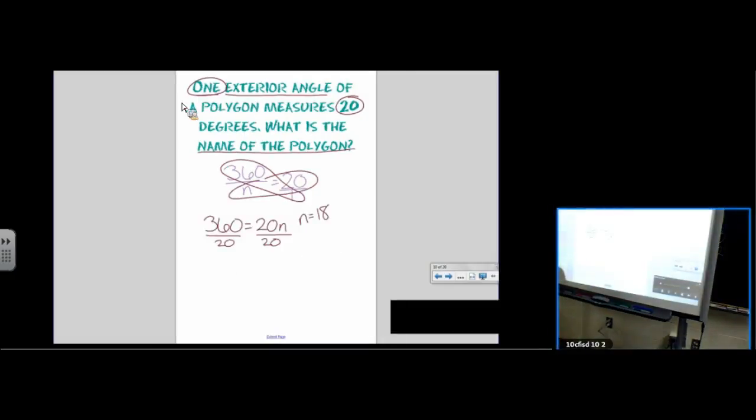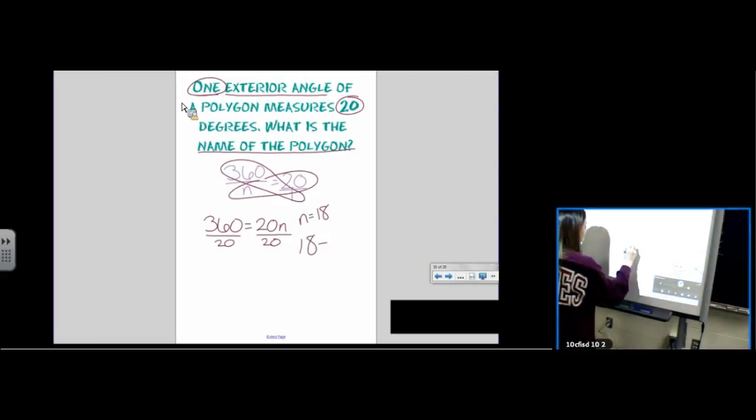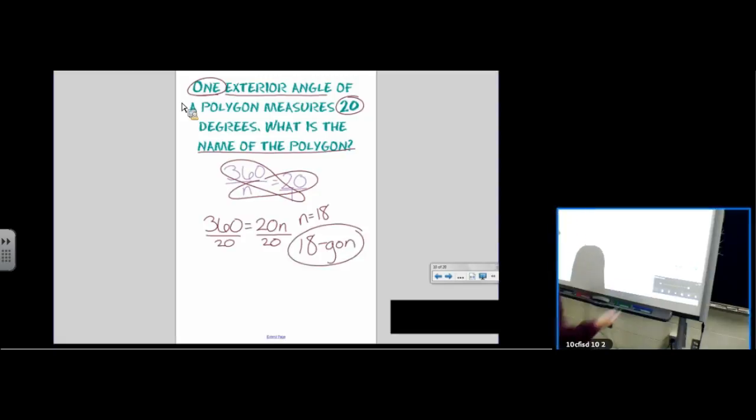Now you can be like, hey, it's asking for the name. What's the name? I don't know the real name. If you want to know the real name, Google it. It's an 18-gon, that's what I'm going to call it. It has 18 sides, and it's a polygon. Boom.